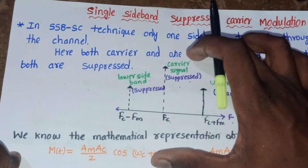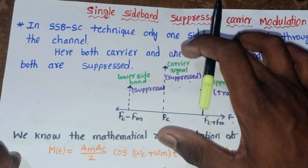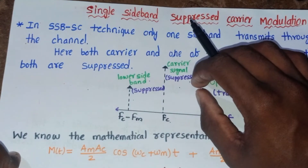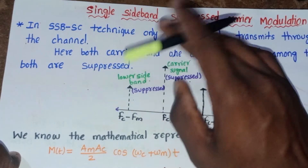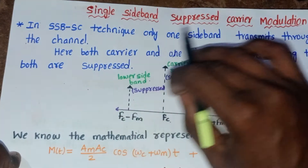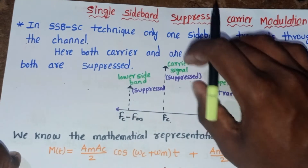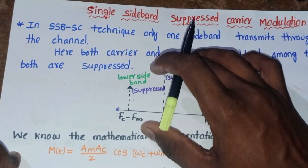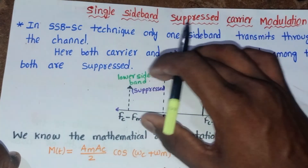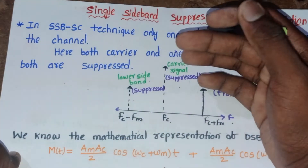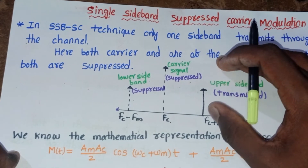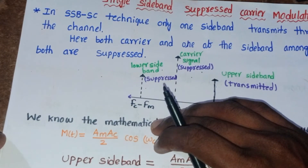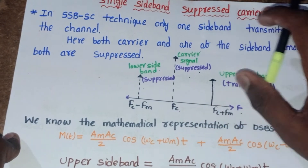Comparing SSB-SC with DSB-SC: in DSB-SC we suppress only the carrier and transmit both sidebands. Whereas in SSB-SC, we suppress the carrier as well as one of the sidebands — either the lower sideband or the upper sideband.